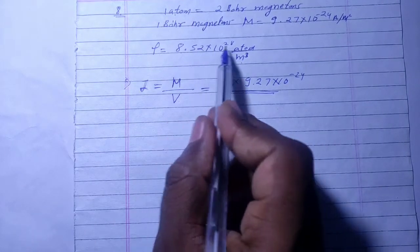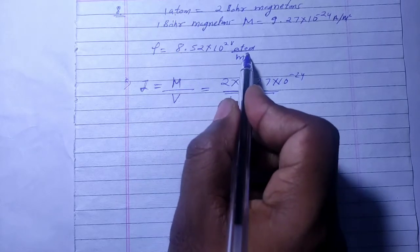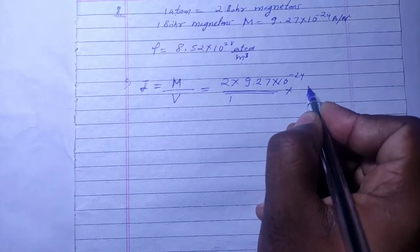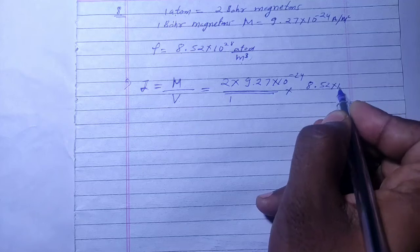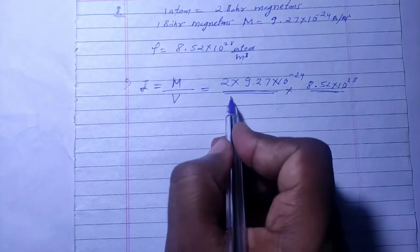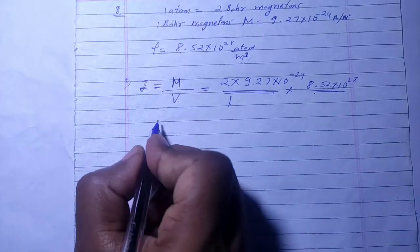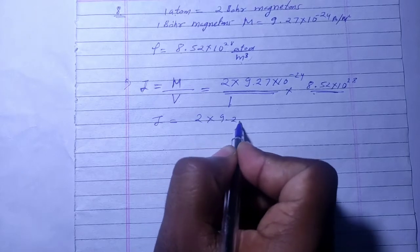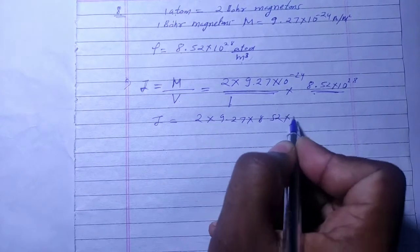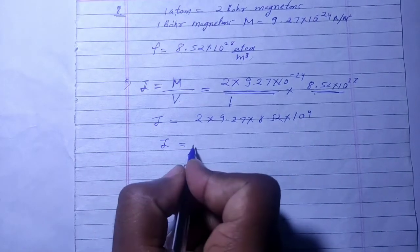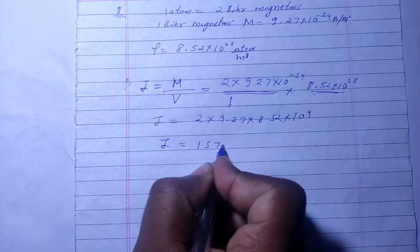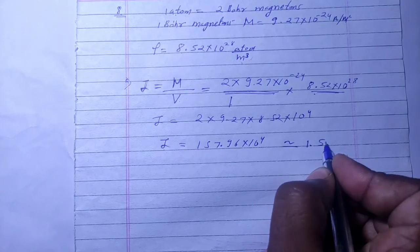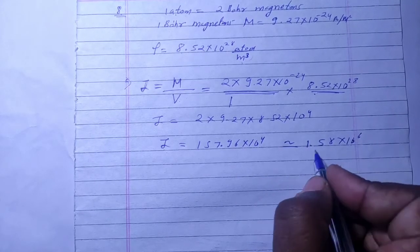Atoms per unit volume. So the magnetization will be 2×9.27×8.52×10^-24×10^28, which gives us 1.57×10^6, approximately 1.58×10^6 ampere per meter.